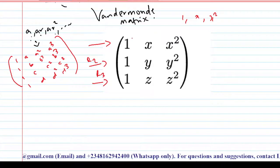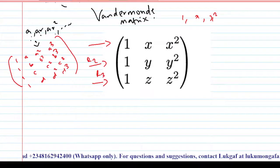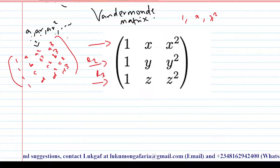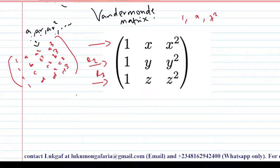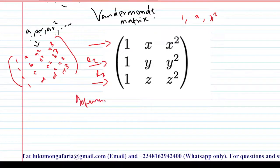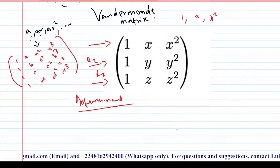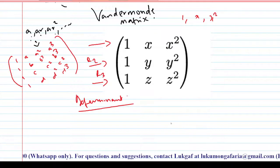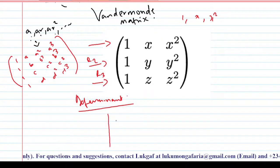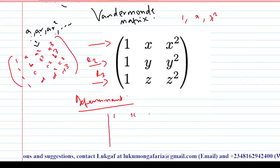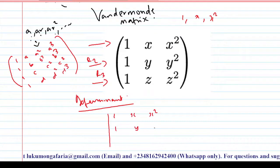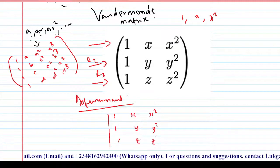When you observe that the matrix has the terms of a geometric progression in each of the rows, then you can conclude that it is a Vandermonde matrix. If you want to find the determinant of this type of matrix according to Vandermonde, you don't need to stress yourself. When you want to find the determinant of this matrix — say 1, x, x squared; 1, y, y squared; 1, z, z squared —